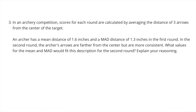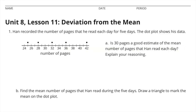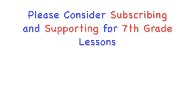The second round mean would be greater than the first round mean — greater than 1.6 inches — and the second round MAD would be less than the first round MAD, so less than 1.3 inches. For example, the second round mean could be 1.8 inches and the MAD could be just one inch. You can use your own numbers as long as the second round mean is greater than 1.6 and the MAD is less than 1.3. Congratulations — you have completed Unit 8 Lesson 11: Deviation from the Mean. Please consider subscribing and supporting for seventh-grade lessons.